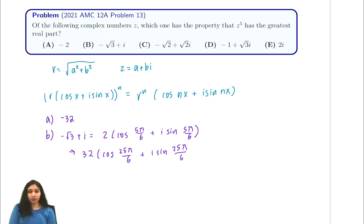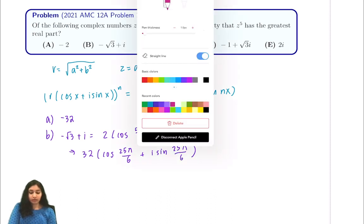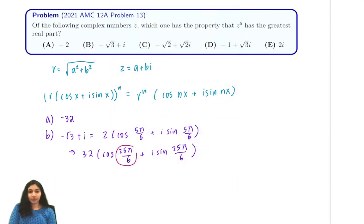Because we're only interested in the real part, we're only really interested in this expression right here. 25π over 6 is equal to π over 6 because of the unit circle, so what we really have here is our real part is 32 times the cosine of π over 6, which is 32 times the square root of 3 over 2.